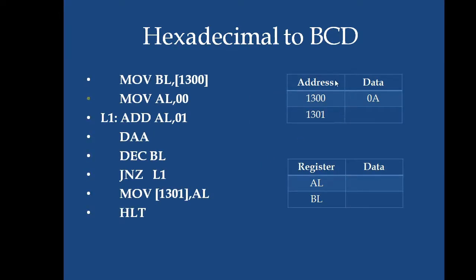This is a program. The address and data for the memory locations, these are the registers. First instruction, move BL comma 1300 location. The data from 1300 is moved to BL. This is the hexadecimal value. Next, the BCD number is initialized to 0 in AL register.